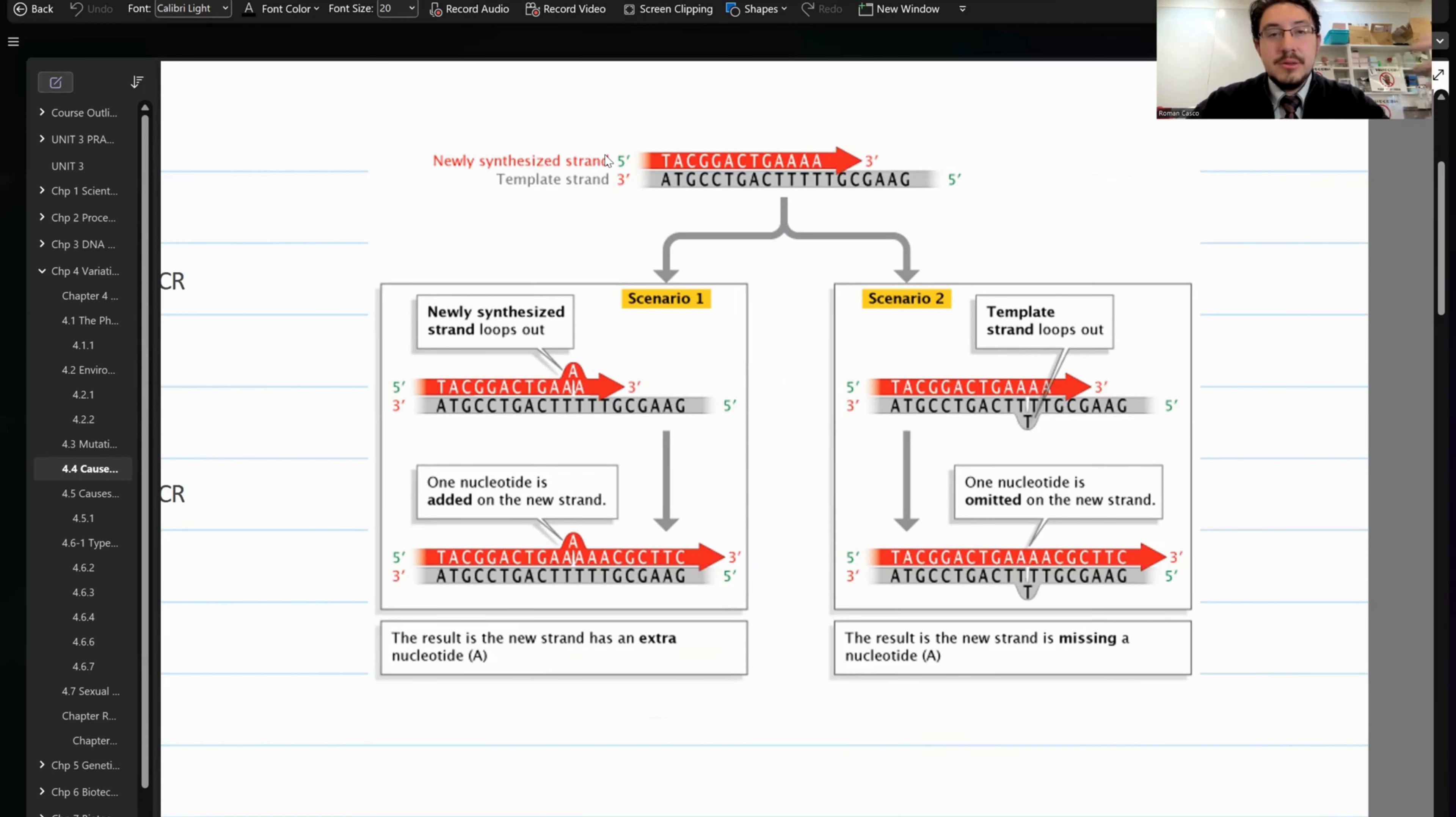Ultimately, you result in missing a nucleotide or you add an extra nucleotide. You don't need to know the specifics of this in the scope of WACE biology, but just know that replication could produce some errors there to create mutations.